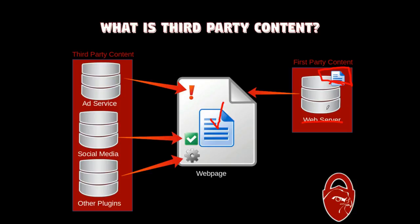Third-party content are all those little extras. For example, a website might be using an ad service, and those ads show up on the page but aren't hosted on the primary web server — they're hosted on their own cluster of servers. Also, social media plug-ins, those like buttons, post-to-Twitter buttons — all that stuff — are plug-ins that show up on the site and aren't part of the first-party content.